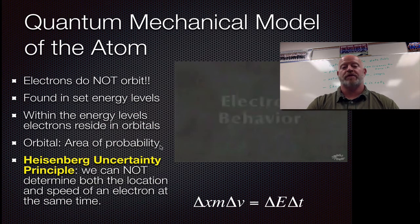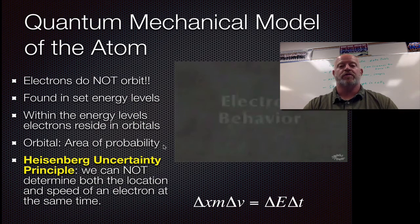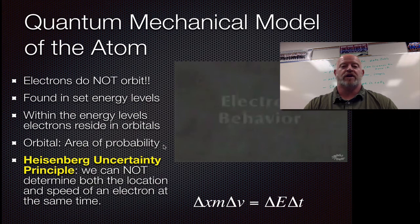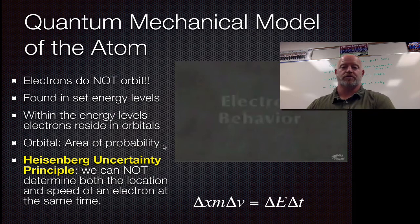Other things about the planetary model versus the quantum model. Both still have the nucleus as a center core and the electrons in this cloud around the outside. The big difference is the planetary model has things in nice orbits and the quantum model has things in areas of probability which we call orbitals.